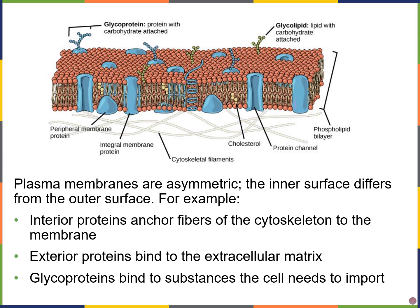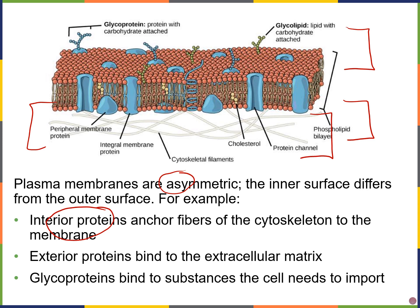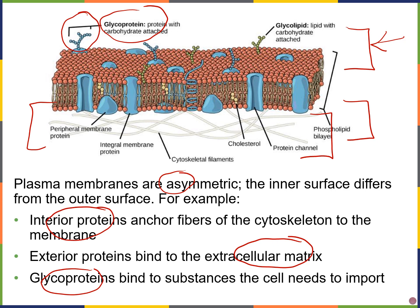The plasma membrane is also asymmetric — the inside portion facing the cytoplasm is not the same as the part facing the outside environment. For example, proteins on the interior portion of the cell membrane will be anchored or attached to cytoskeleton proteins such as microtubules, microfilaments, and intermediate filaments. Exterior proteins, on the other hand, can bind to the proteins and sugars found in the extracellular matrix. Glycoproteins on the surface of the cell can also bind to substances the cell needs, such as hormones or different types of cell signals.